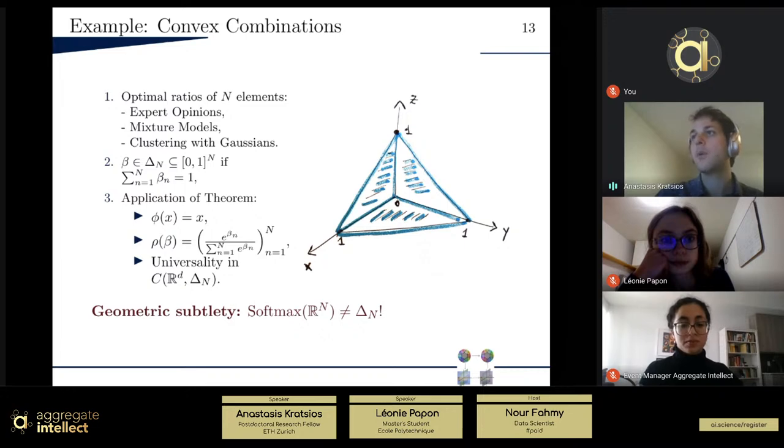So, how does our theorem apply? Well, if we take our feature map just to be, for example, the identity on our input space, doesn't apply, doesn't change anything in this example. And the readout map is this sort of famous softmax function. So, this sort of exponential ratio. So, then the point of our results is that if you use these modifications to your network, which are the ones that are used in practice, then you get universality.